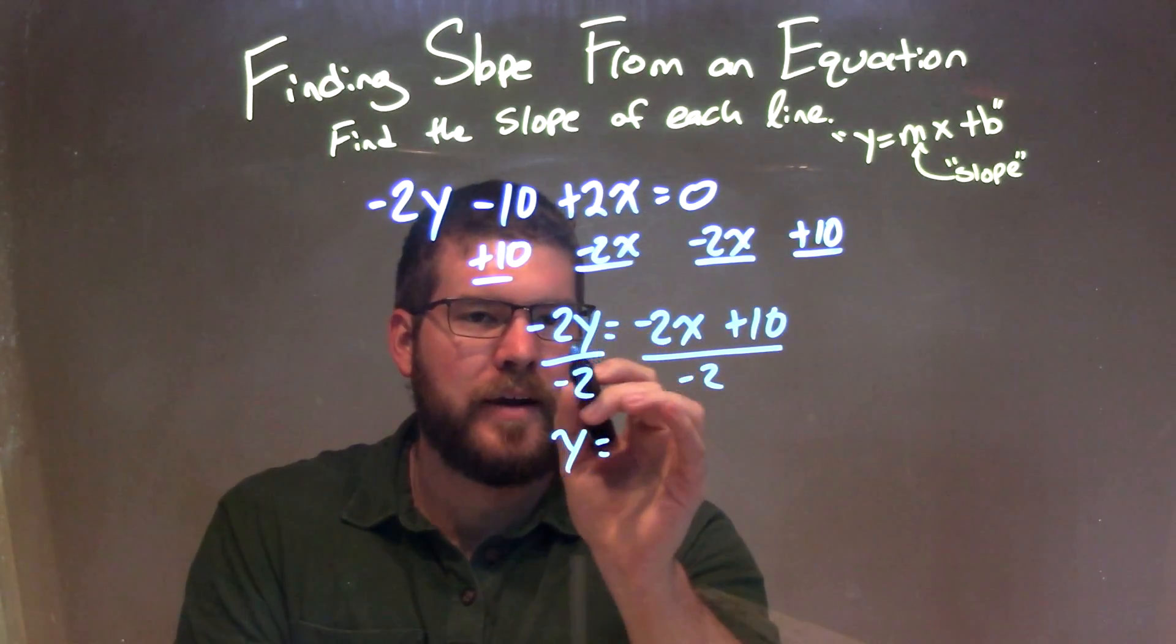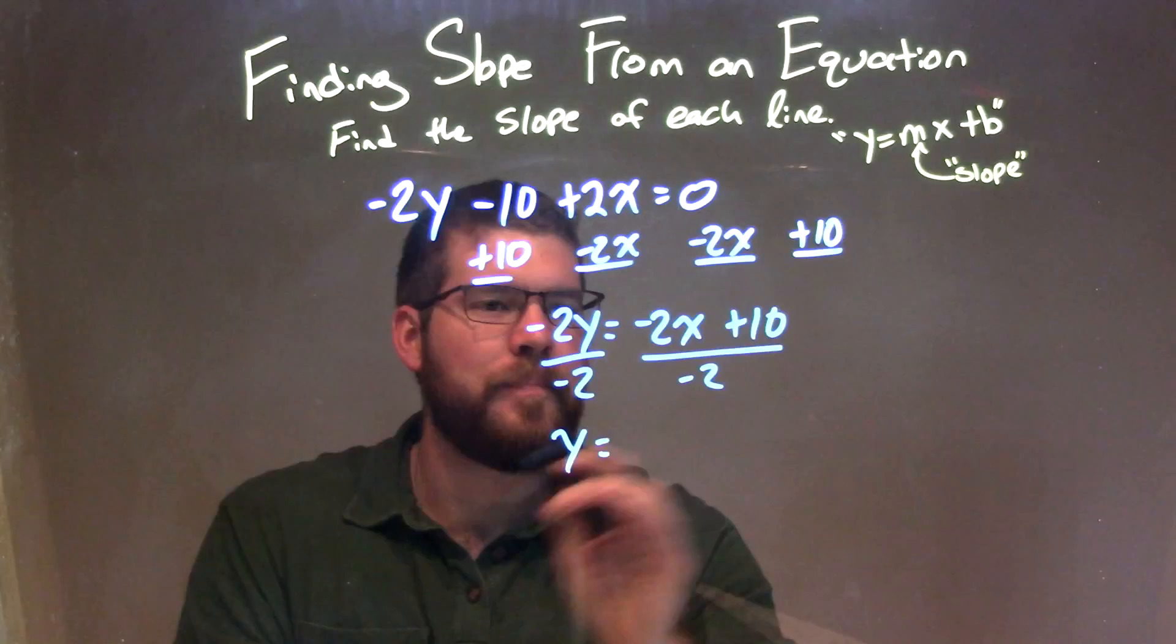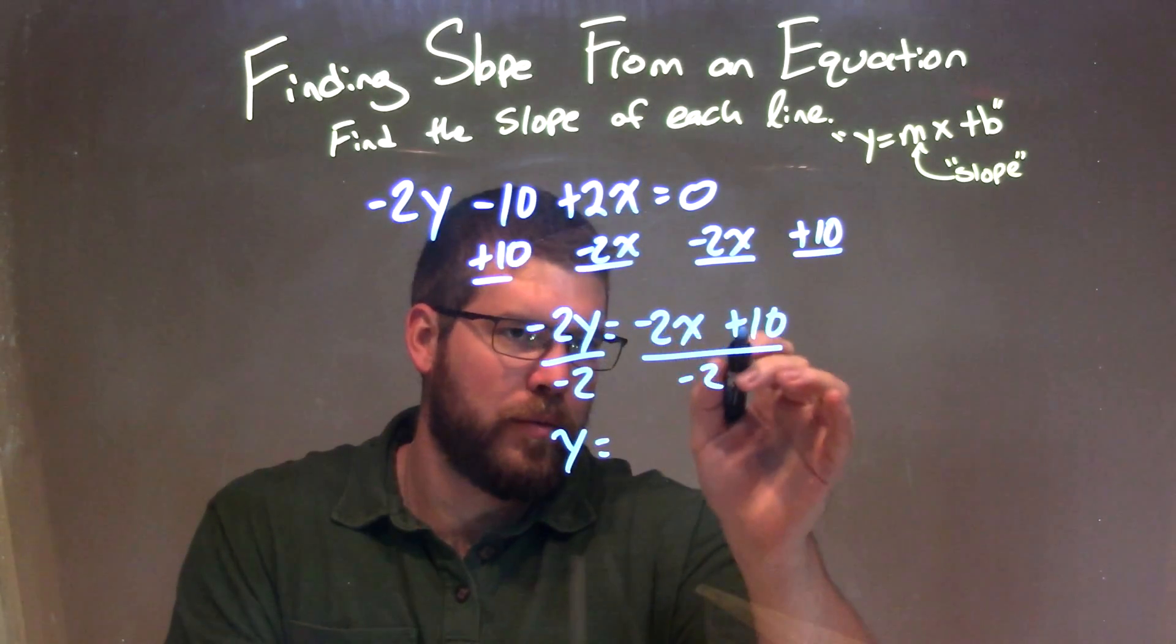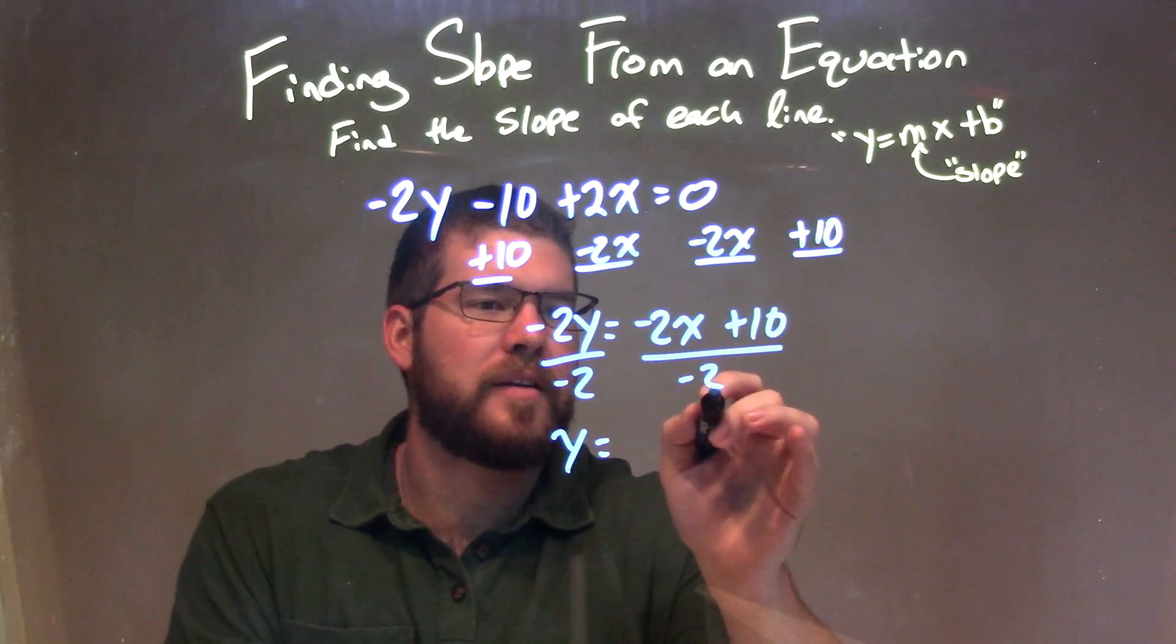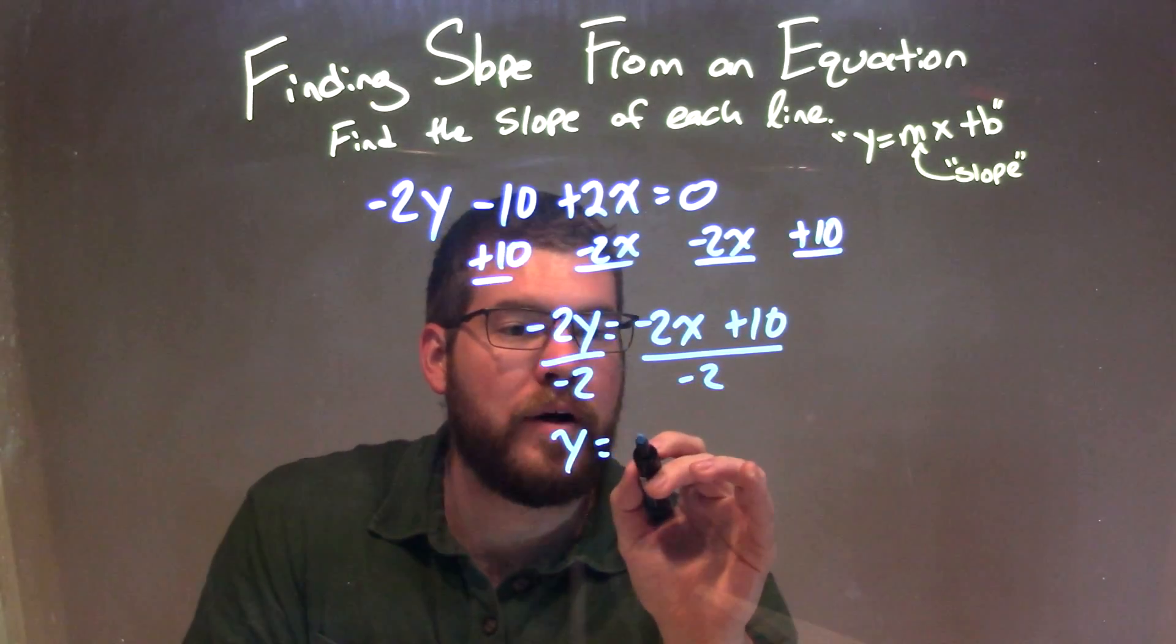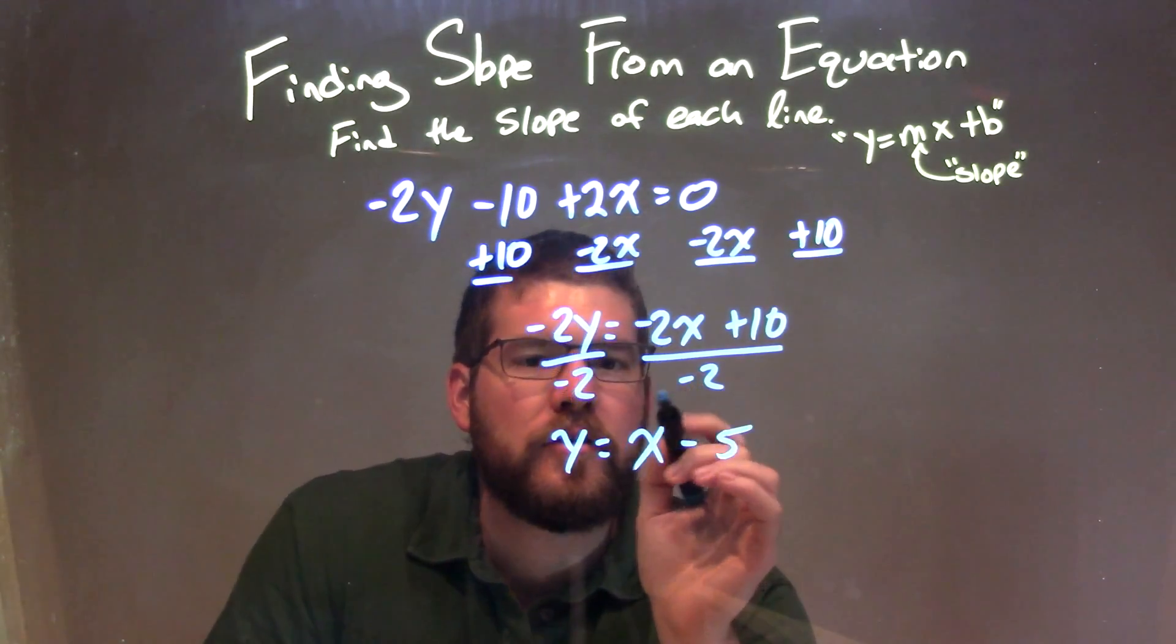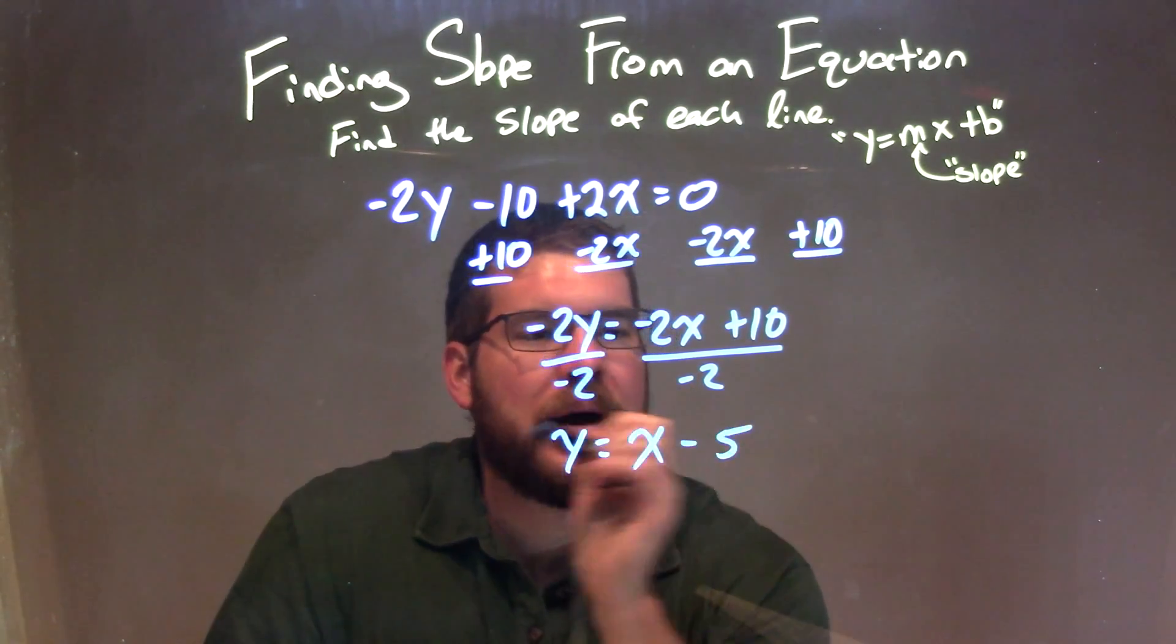So you have y by itself here, right? Negative 2y divided by negative 2 is just y, and I distribute the negative 2 to both parts. Negative 2x divided by negative 2 is a positive 1, so we just have an x there, and 10 divided by negative 2 is a negative 5. So we have y equals x minus 5.